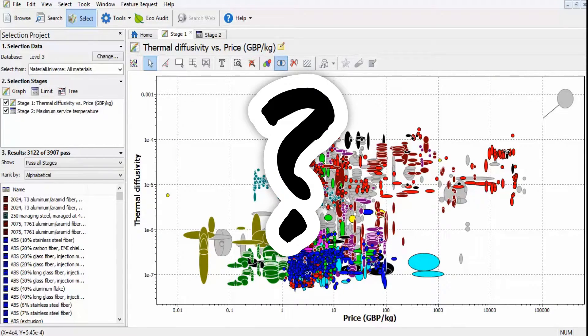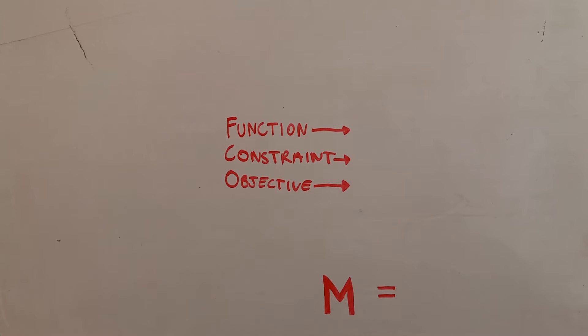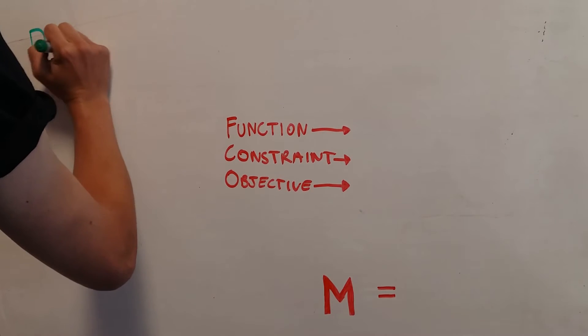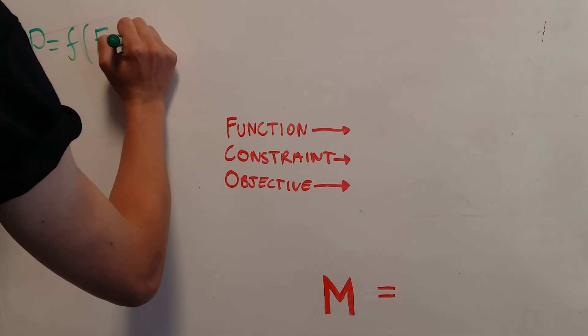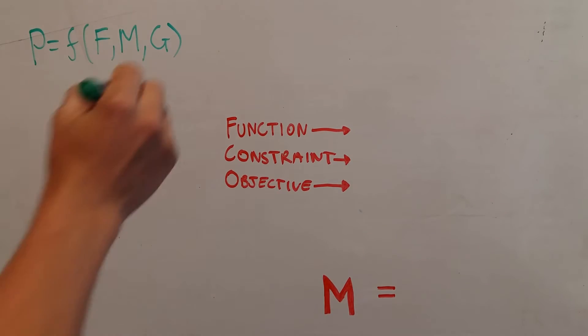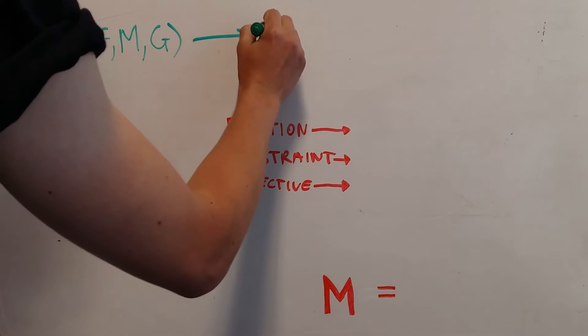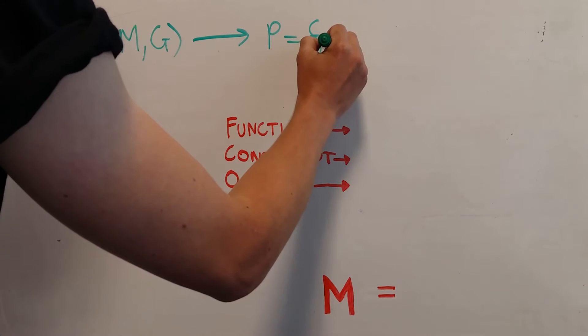But what do we do from here? Performance of the finished product is determined by a combination of functional requirements, material properties, and geometric parameters. The optimal design is the selection of the material or geometry that maximises P.